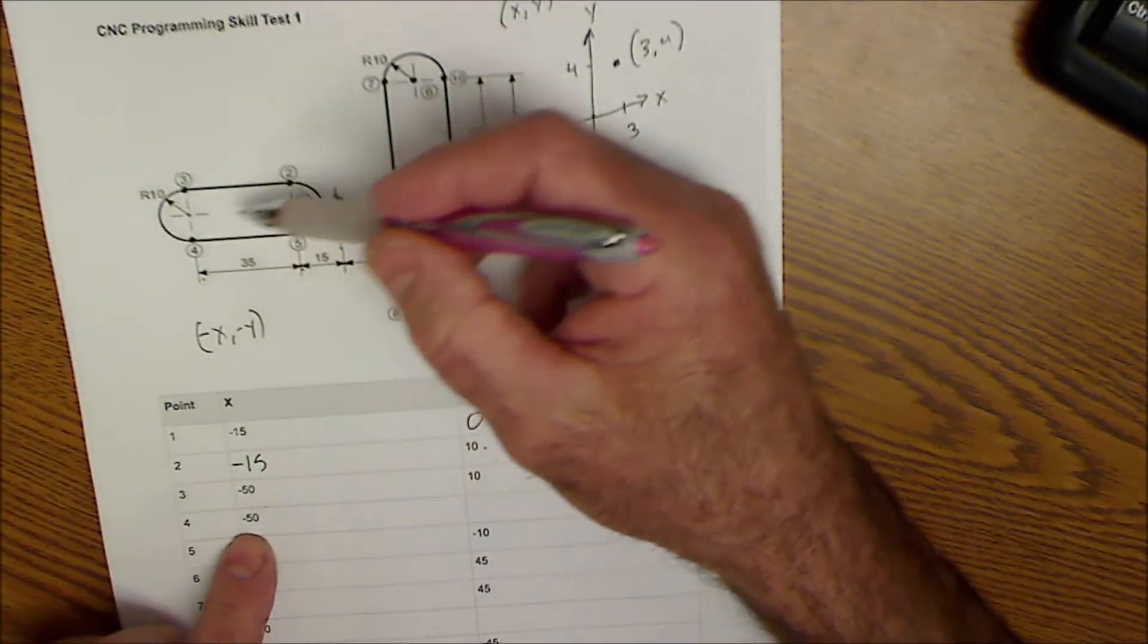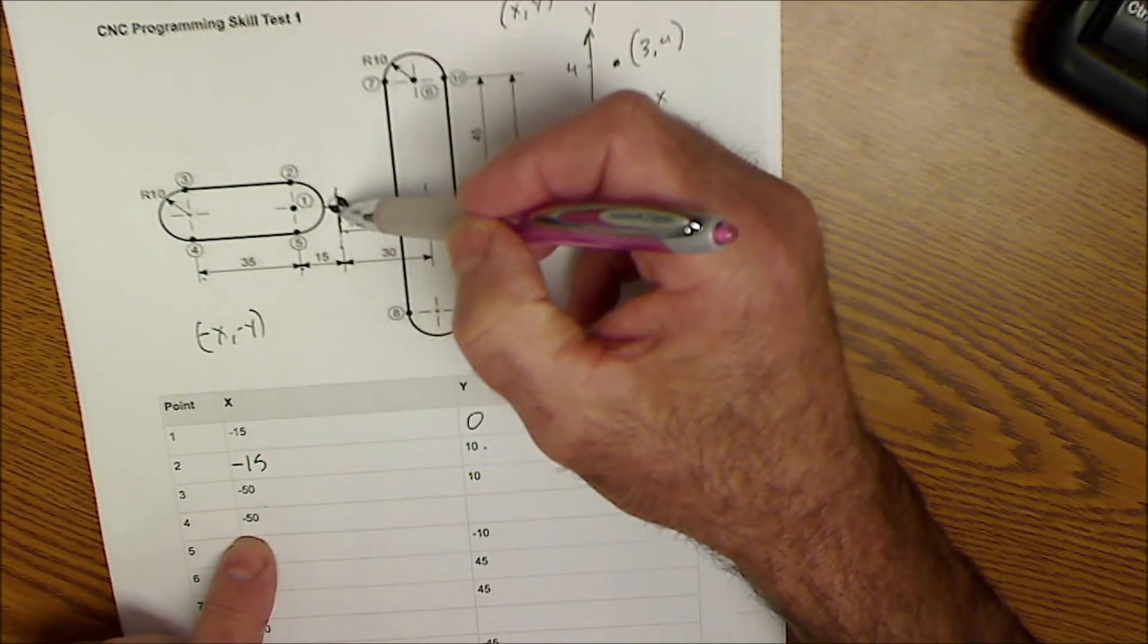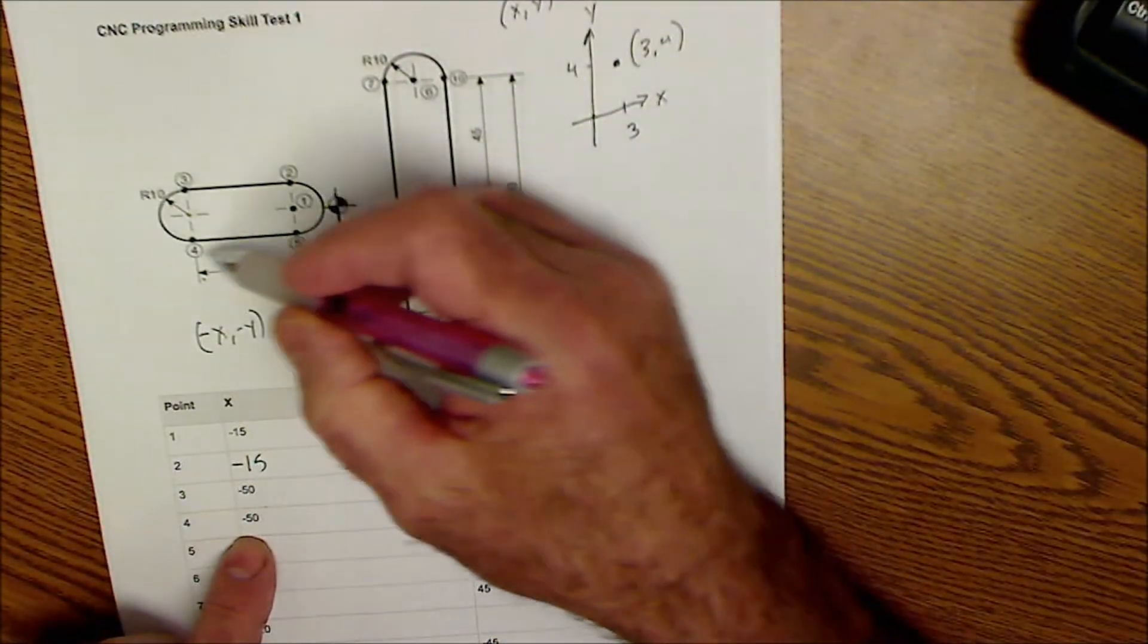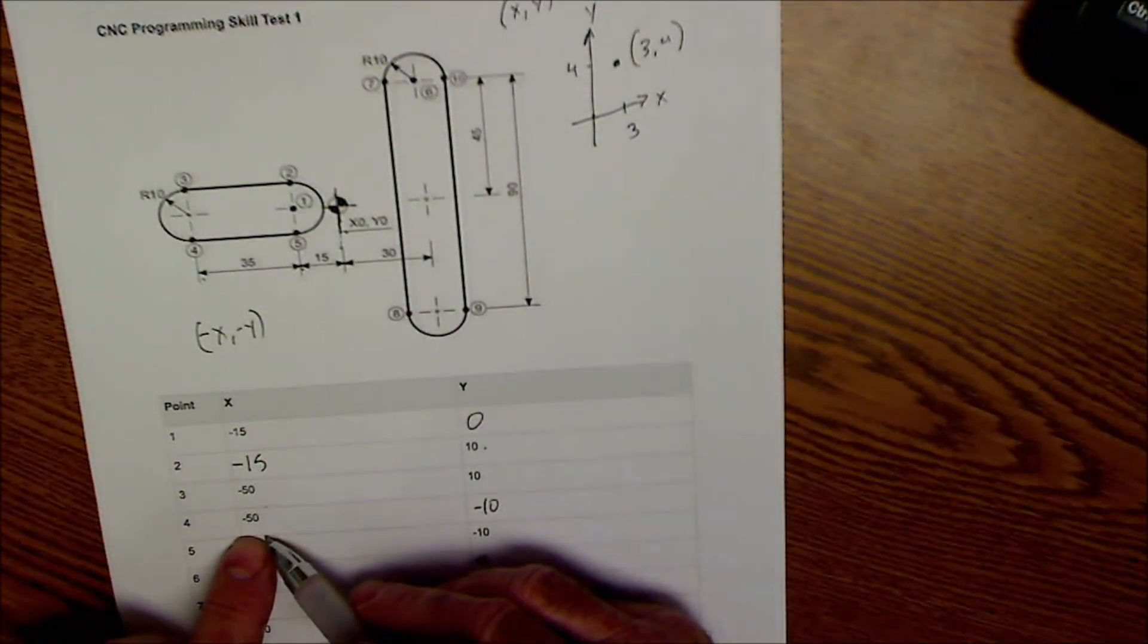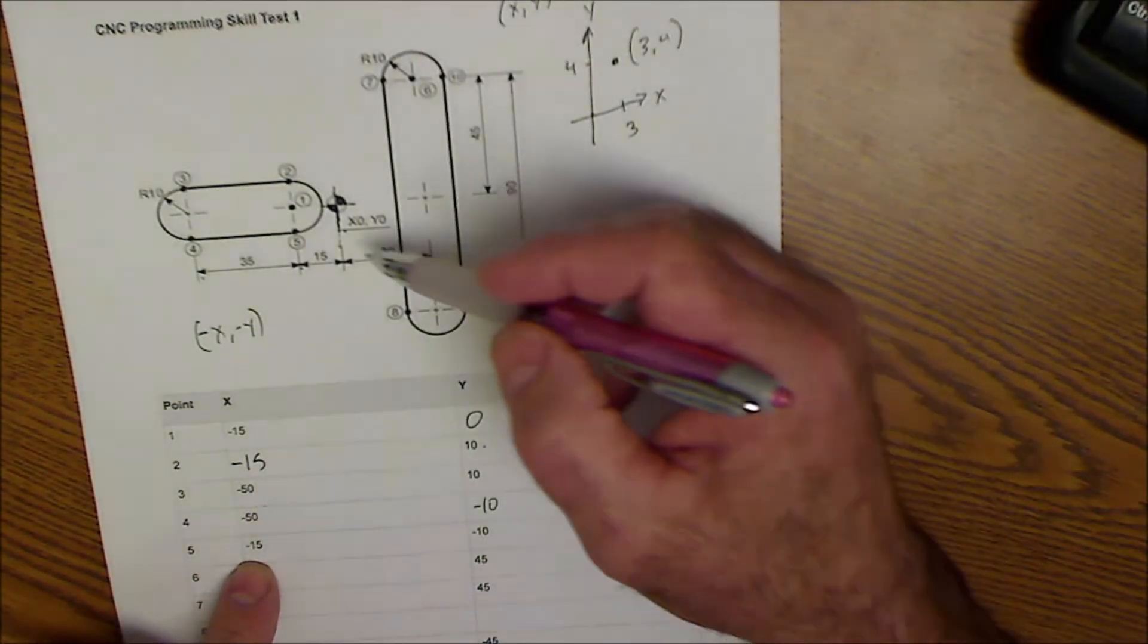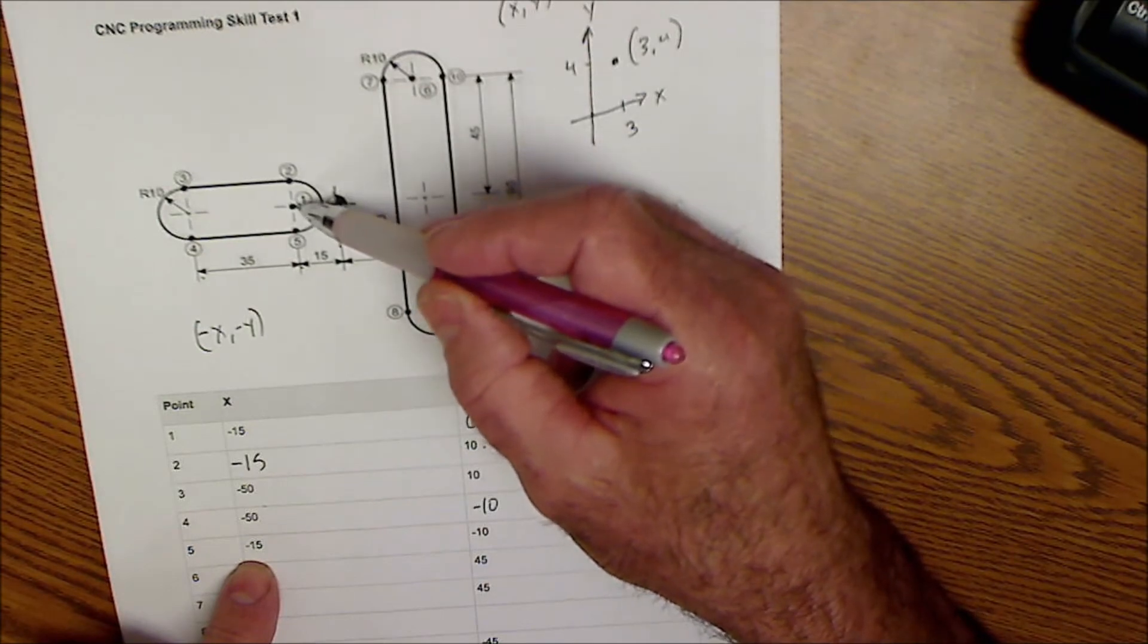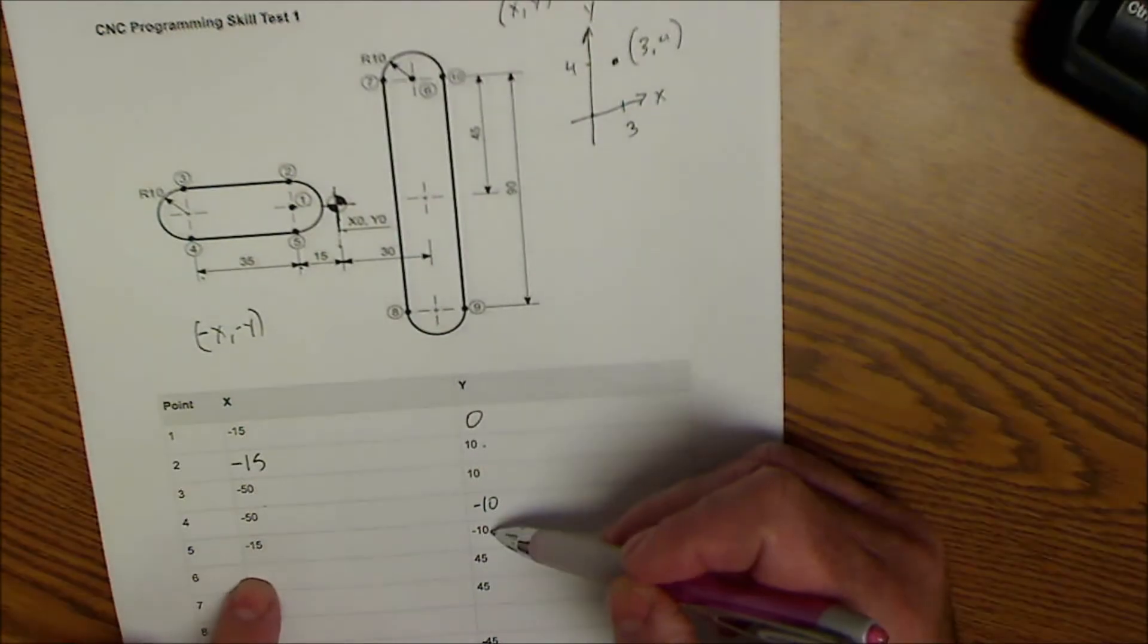Point number four - I am down a radius amount, so I am down negative 10, and I am over that 50 in the X direction. Point number five right here - I'm over that 15, so negative 15, and I am down 10. That's where that negative 10 comes from.